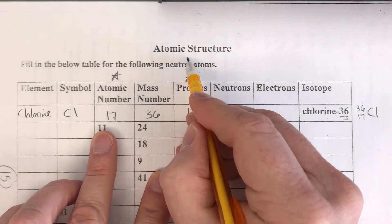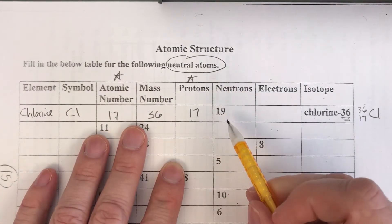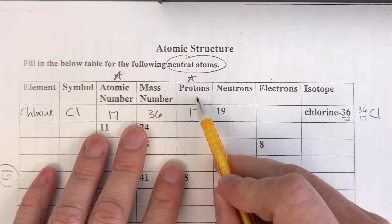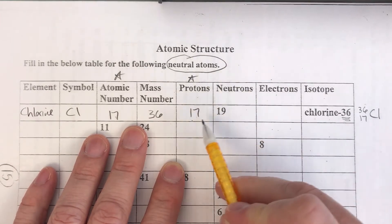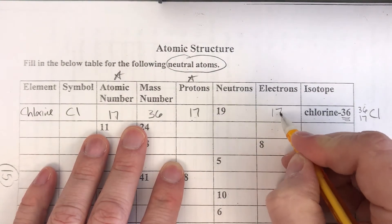Now this says this is a neutral atom. One of the things we also learned in chemistry class is that when an atom is neutral it has to have the same number of protons as it does electrons. So if I have 17 protons that means I have 17 electrons.